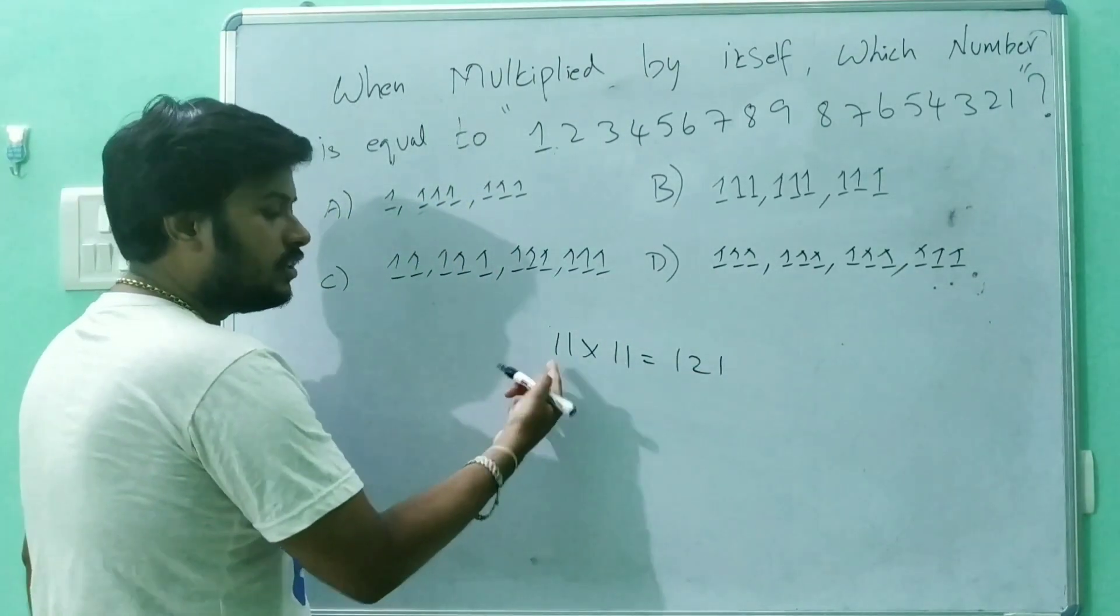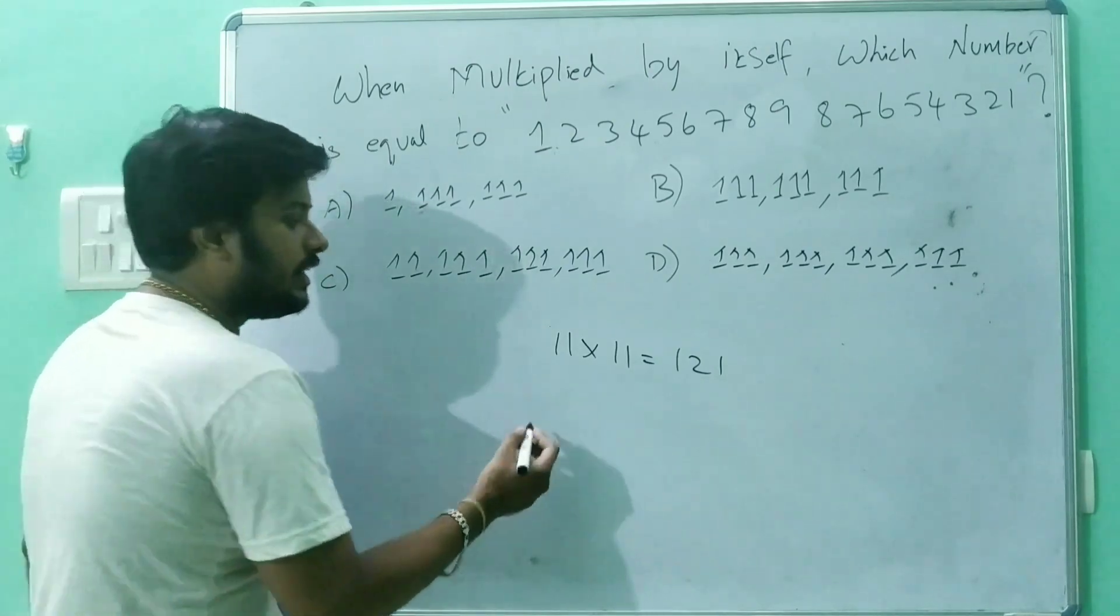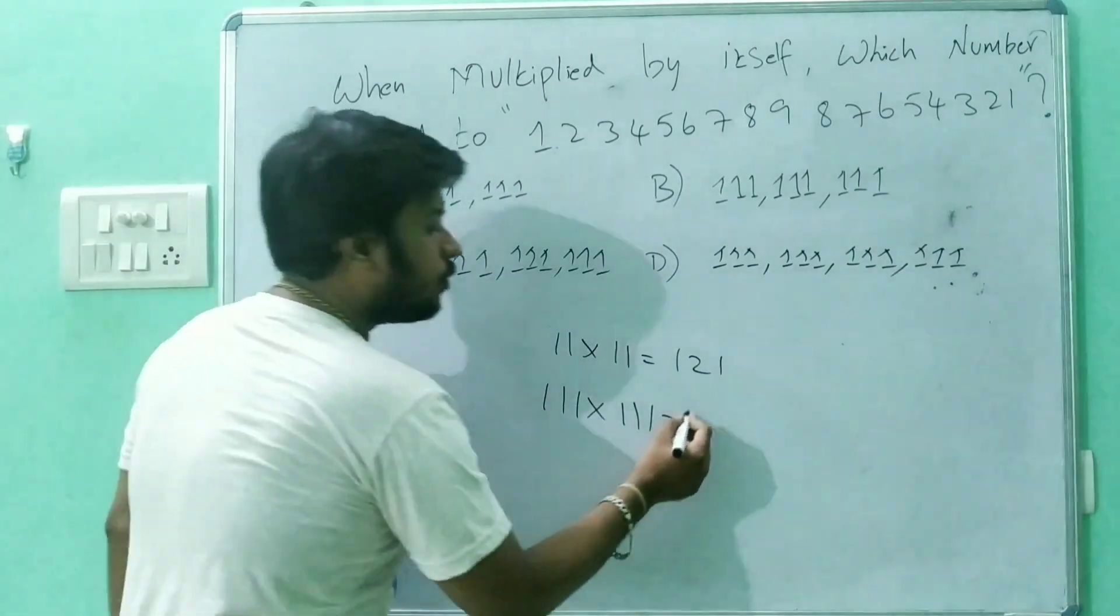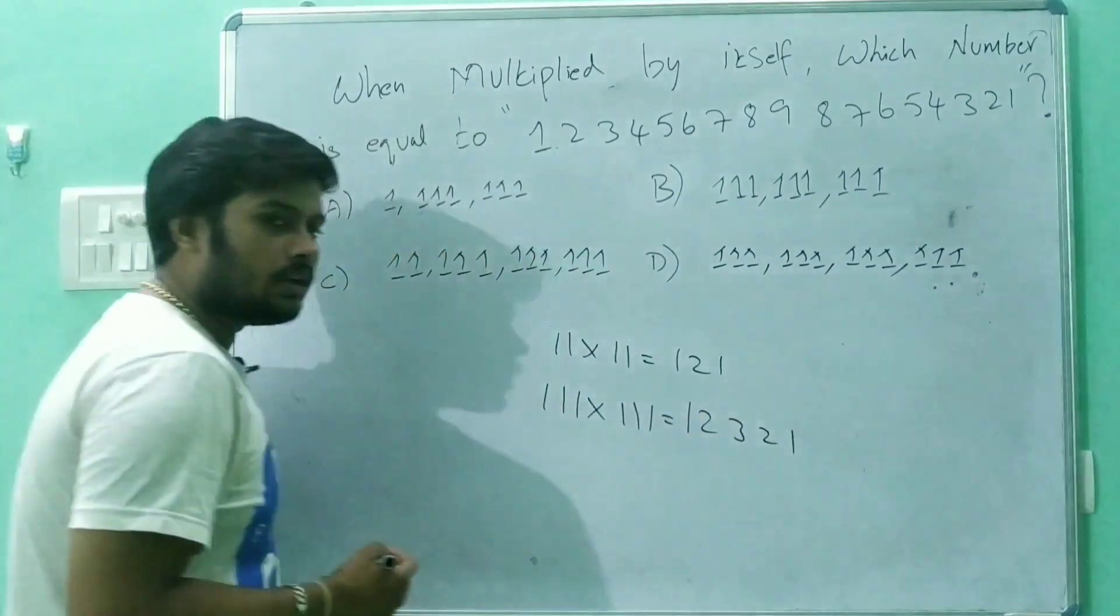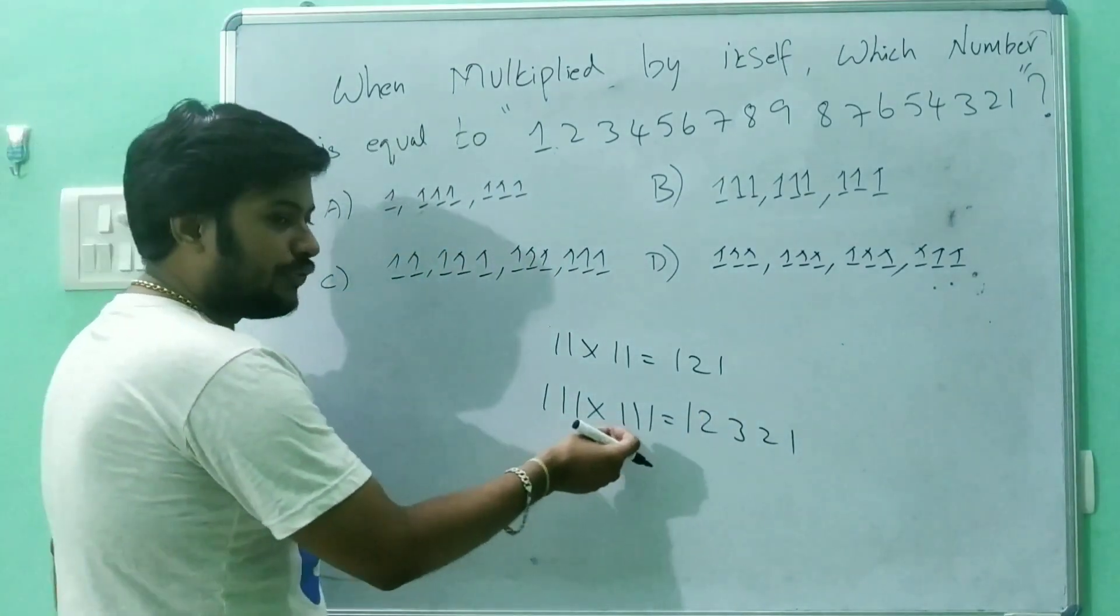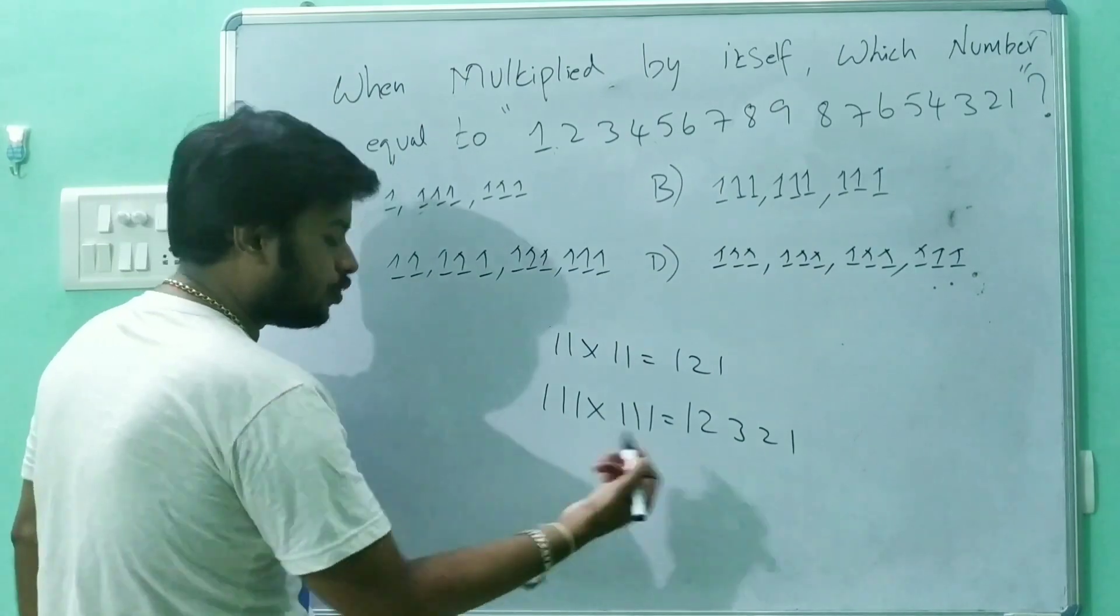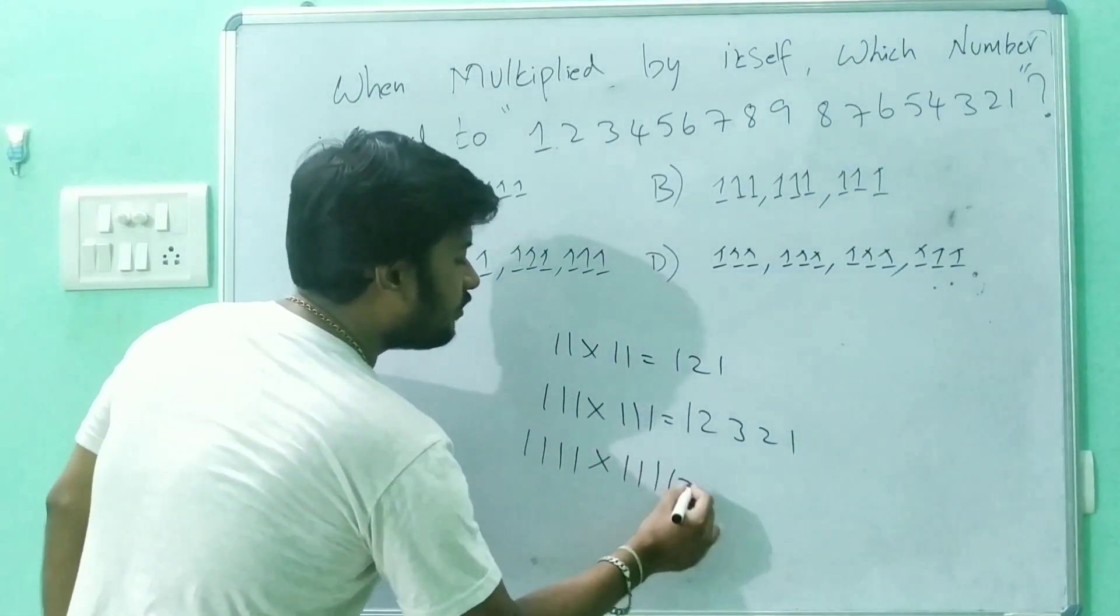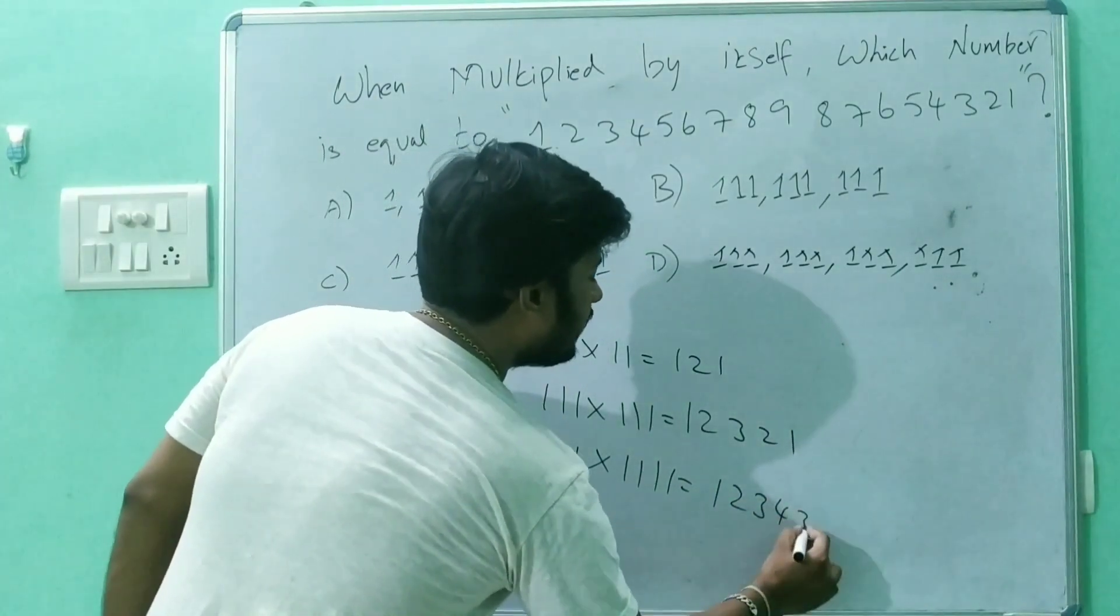Now if I use three ones, that is 111 into 111, I'll get the palindrome number 12321. Same like this, if you go for four ones, that is 1111 into 1111, you can predict the value will be 1234321.